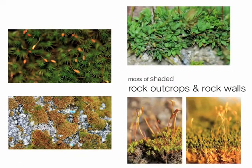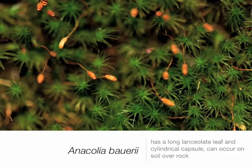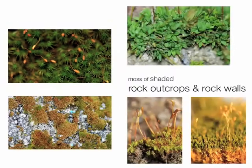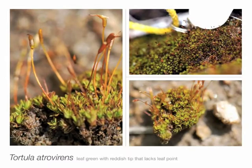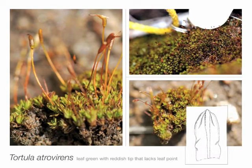If we have rock or soil covering over that rock, we can find Anacolia webbii, which has a cylindrical capsule. That is opposed to Anacolia menziesii, which likes shadier locations and has a very rounded capsule. Next we have another species of Tortula — Tortula atrovirens — which grows on soil, has a green leaf with reddish tips, a thickened region at the tip, and no hair point.